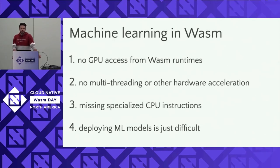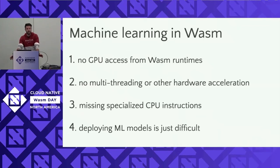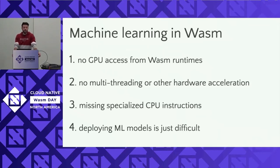There are a couple of problems that make running machine learning in WebAssembly today not ideal. First and most obvious is we don't have GPU access in WebAssembly runtimes. There's also no multi-threading or other hardware acceleration. There are obvious missing CPU instructions from WebAssembly that probably no one's going to add for each machine learning framework. And in general, deploying machine learning in production is just difficult.